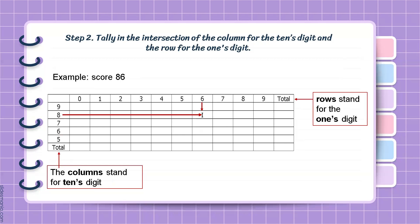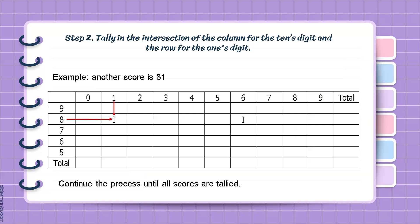Step 2 is to tally in the intersection of the column for the tens digit and the row for the ones digit. For example, the highest score is 86. We tally in the intersection of 8 and 6. We continue the process until all scores are tallied.